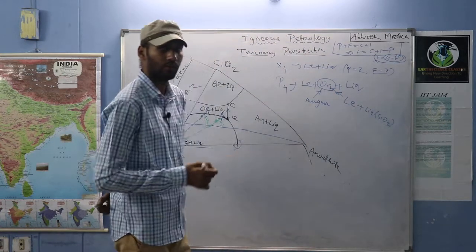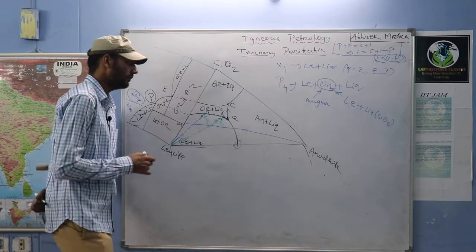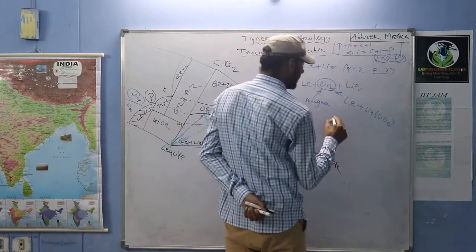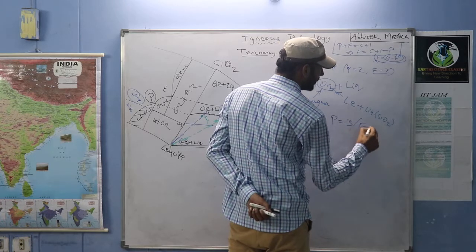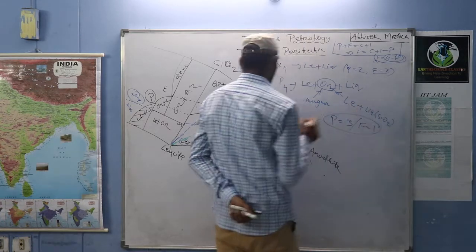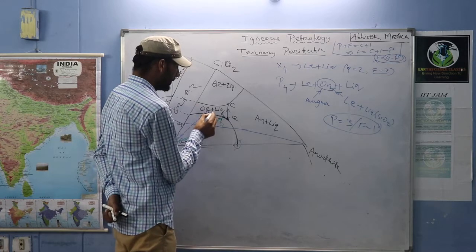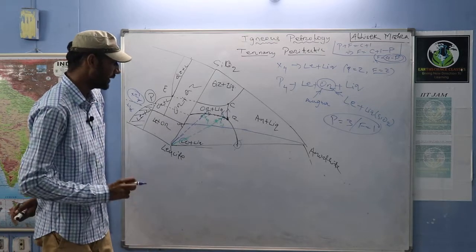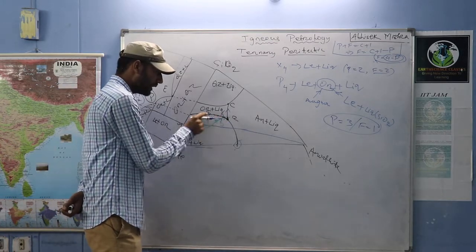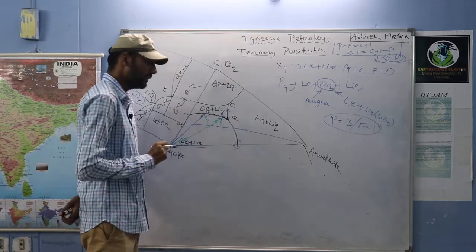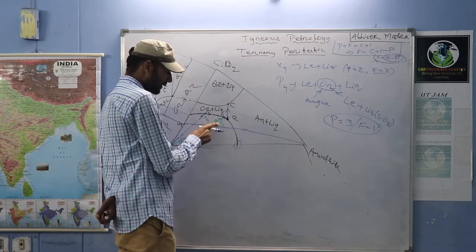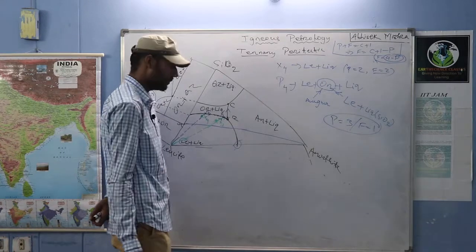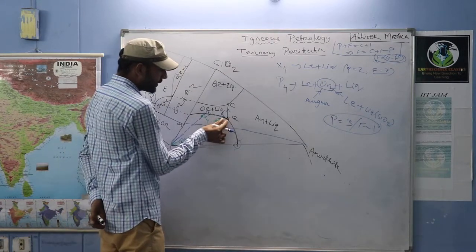Let us say P5 moves directly to P6 here. Joining leucite and P5 touches here at P6. At P6: orthoclase plus quartz plus liquid. I have joined leucite and P5 because degree of freedom is two — you must join with the vertex. So from P5 it directly moves to P6 at the cotectic curve.